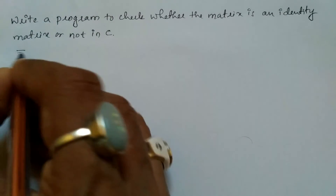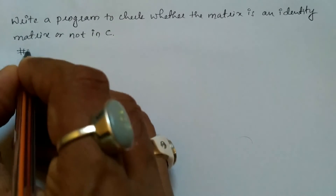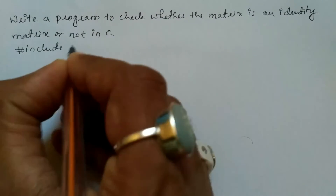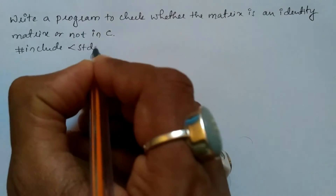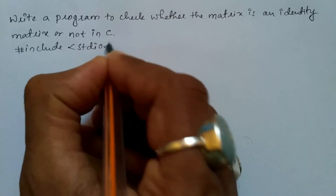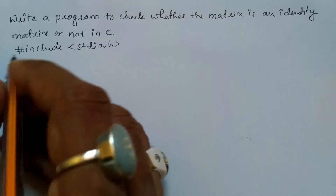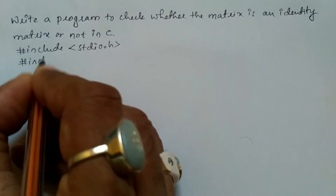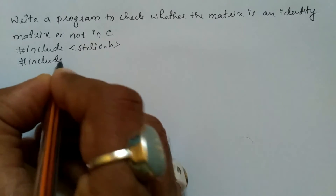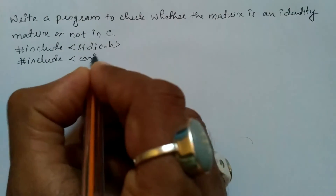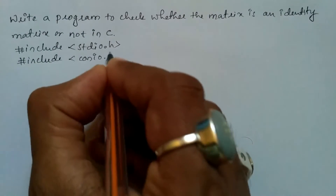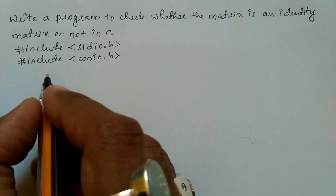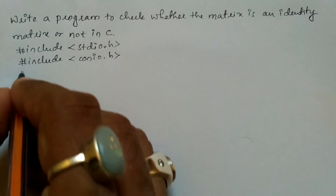Let us write the preprocessor directives: hash include, and in angular braces we will write standard input output dot h. The next preprocessor directive is hash include, and in angular braces we will write console input output dot h header file.